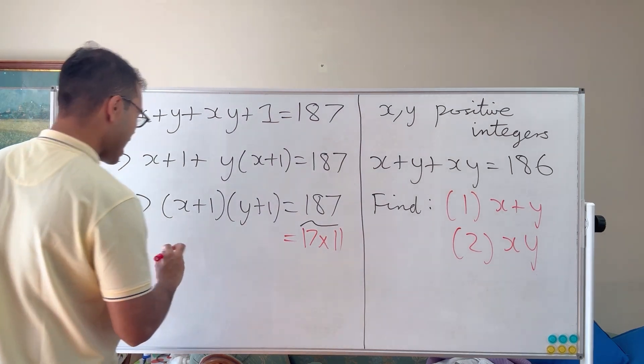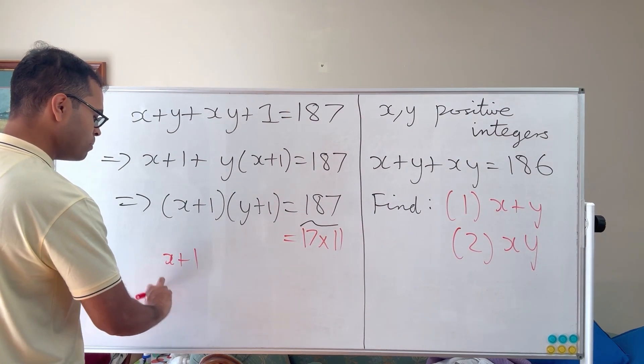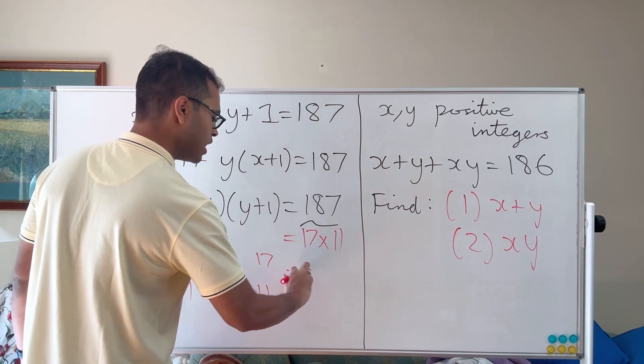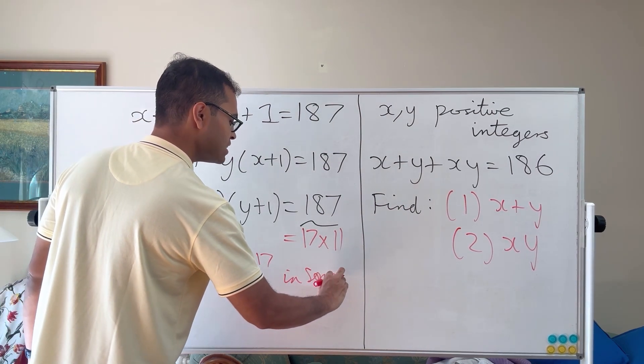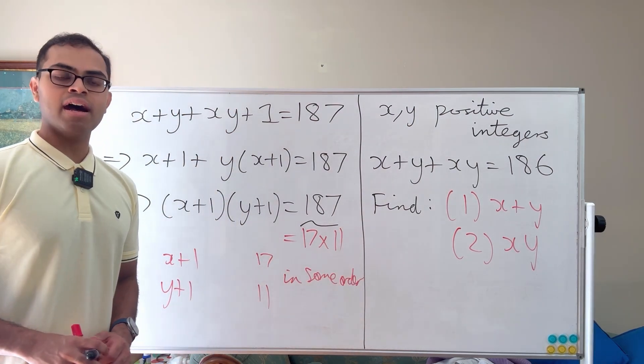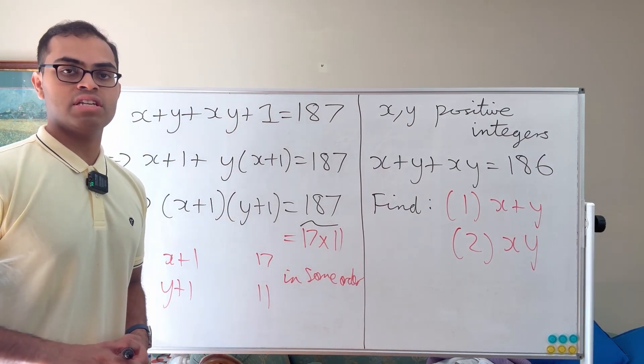So that means that x plus 1 and y plus 1 have to be 17 and 11 in some order. It could be x plus 1 is 11 and y plus 1 is 17, or y plus 1 is 11 and x plus 1 is 17. It doesn't matter.